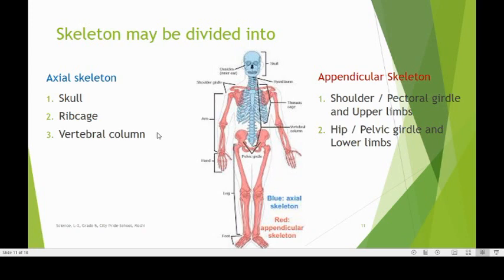Thus, the skull, the rib cage and the vertebral column or the spine make up the axial skeleton, and the pectoral or shoulder girdles and the upper limbs or arms, and the hip or pelvic girdles and the lower limbs or legs make up the appendicular skeleton.